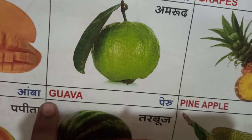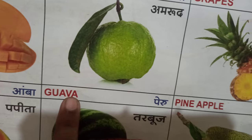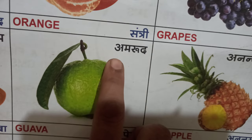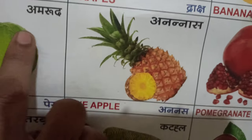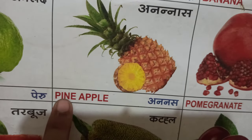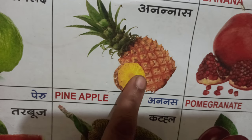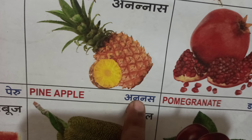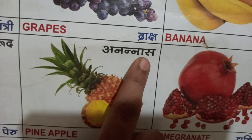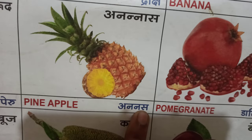This one is Guava. Spelling: G-U-A-V-A. Guava. In Marathi we call it Peru, and in Hindi we call it Amrut. This one is Pineapple. Spelling: P-I-N-E-A-P-P-L-E. Pineapple. In Marathi we say Ananas, and in Hindi we say Ananas — Ananas and Ananas, it's a little different.